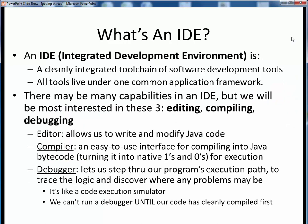We just covered the first raw material of software development — the programming language itself, or in our case, the Java JDK. Now let's shift our attention to the tools needed to develop with that language. In modern-day software development, we typically like to work with a programming language using an integrated development environment, or an IDE. An IDE is a cleanly, tightly integrated set of software development tools which can all be invoked underneath one common multi-paned window or application framework. As software developers, we're going to be interested in three core capabilities: editing code, compiling code, and debugging code.